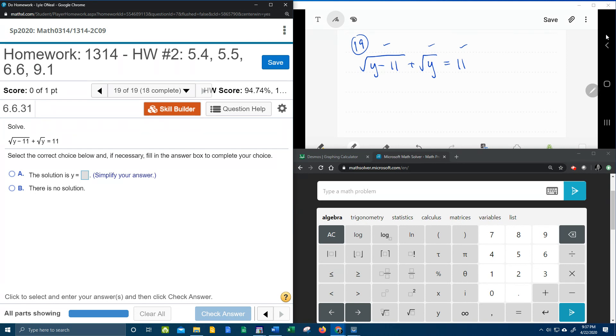So here's what's going to happen. We're going to have to take one of these square roots. I'm going to take the square root of y minus 11, and I'm going to isolate it. So the square root of y is going to come over. That's going to make it minus square root of y, and that's going to get the square root of y minus 11 all by itself.